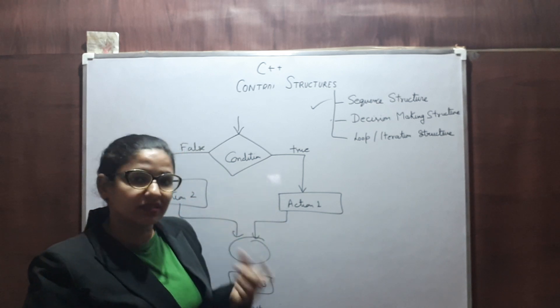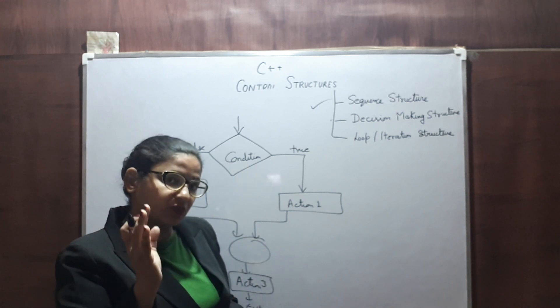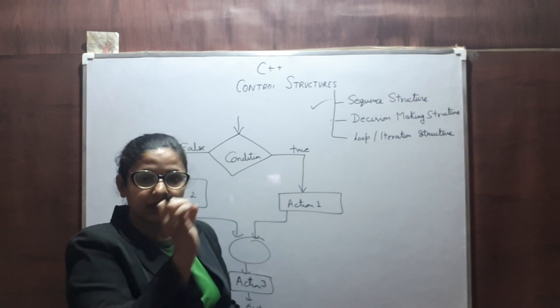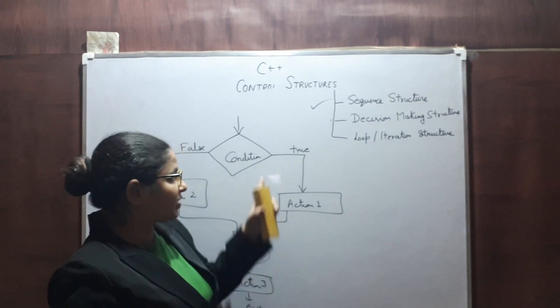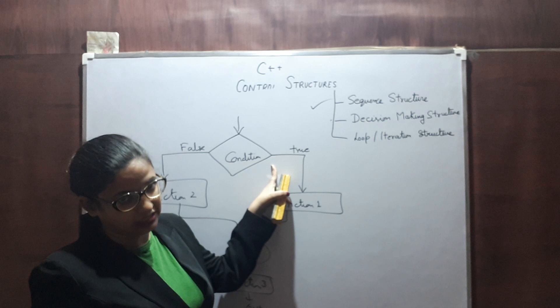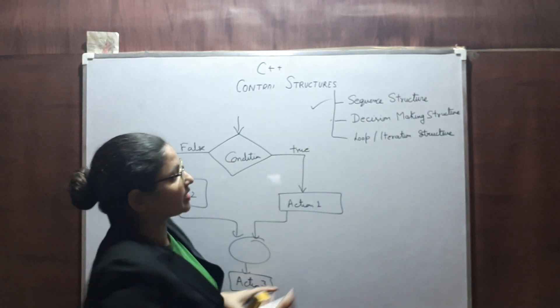Based on the condition, whether it is evaluated to true or false, we are making our decision. We are not executing Action 1 and Action 2. We are just executing Action 1 or Action 2 based on the output of our condition. So this is our decision making structure.